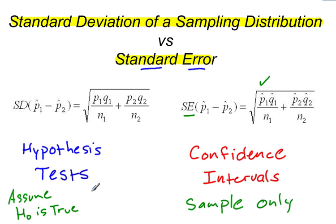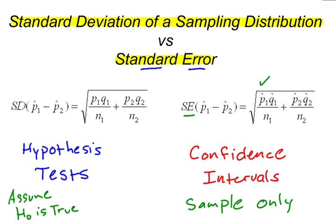Therefore, that's why we use standard deviation of a sampling distribution when we're using hypothesis tests, and we can say standard error when we are talking about confidence intervals.